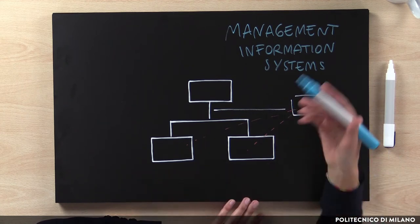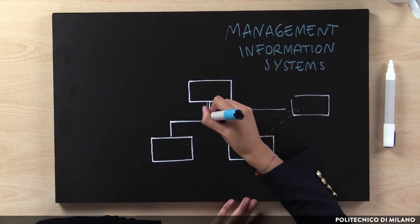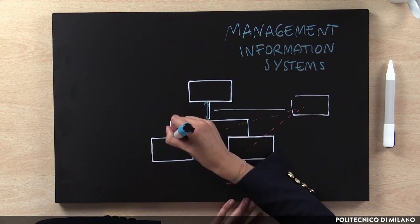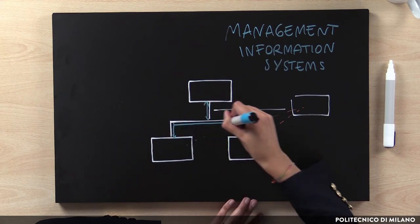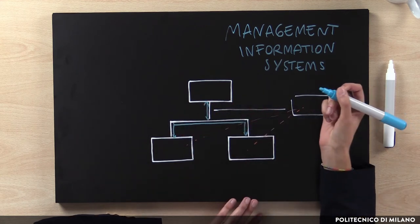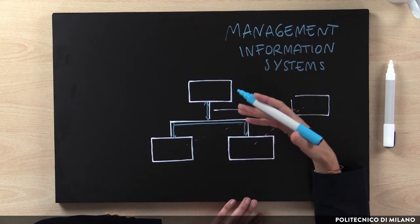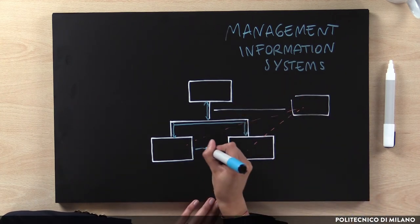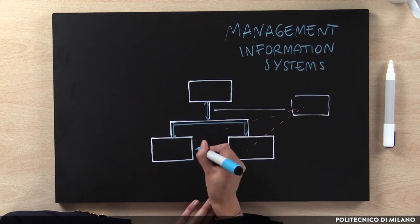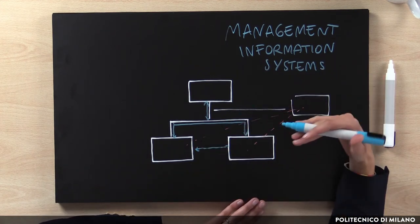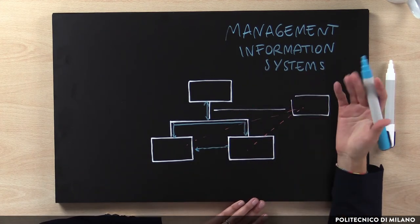The vertical information systems support the vertical spreading of information within the company through the different hierarchical levels. Typical examples of these are reporting systems, dashboards and budgeting systems. The horizontal information systems support the horizontal flow of information. Typical examples of these are ERP systems, intranet or knowledge management systems.